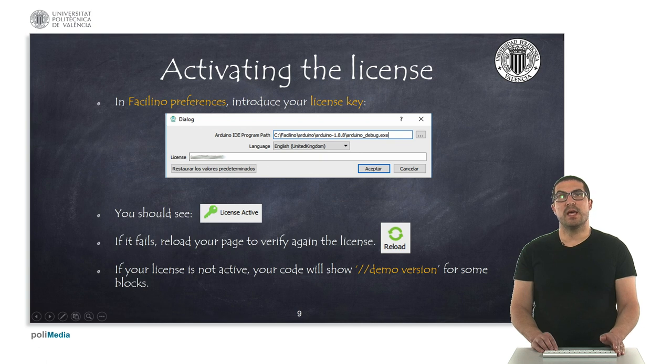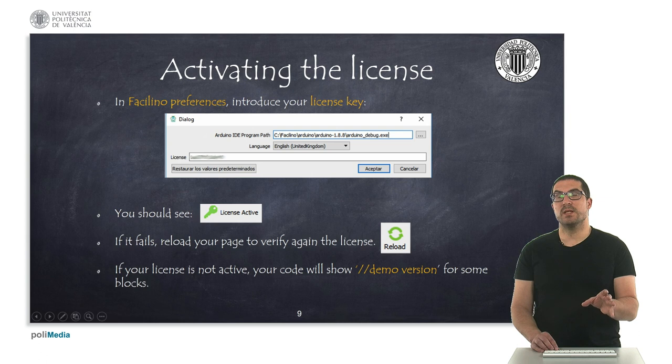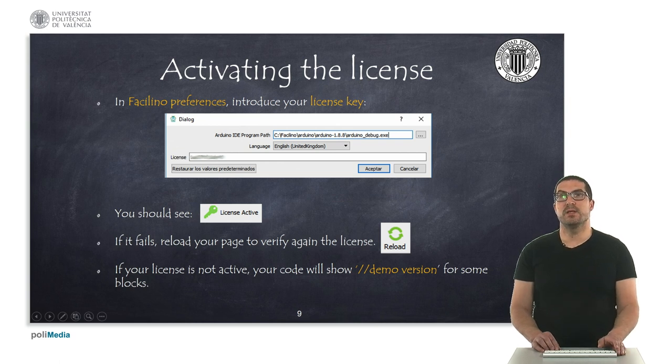Once you have the license, you just simply have to go to Facilino preferences and introduce the license there. There's a field for that, you just simply have to accept it, and then immediately you should see that your license is active at the bottom of the software. If it fails for whatever reason, you can always try to verify the license again, just simply by clicking the reload button. If your license is not active, your code, as I said before, won't generate for some instructions, it will be fine for others, but for some instructions they won't generate, and you will see this demo version comment in your code instead.